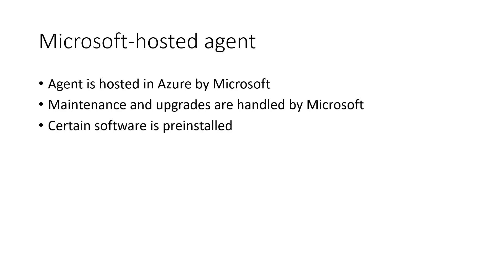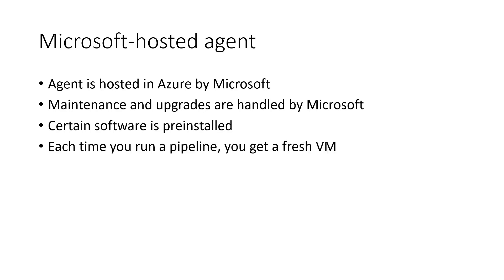You can look up what software is installed on the agents by default, and if any software or frameworks are missing, it's up to you to make sure they get installed on the Microsoft hosted agent. Each time you run a pipeline, you get a fresh virtual machine, and that virtual machine is discarded after one use. So if another pipeline runs after this one, it gets a new machine, and any extra software that has to be installed again takes time — which can add to your overall build time.